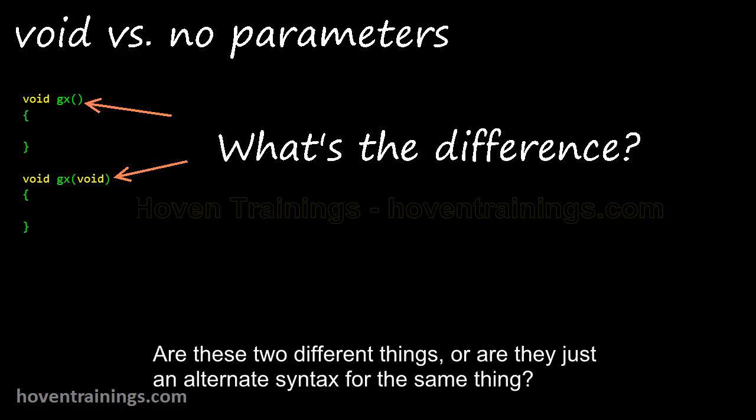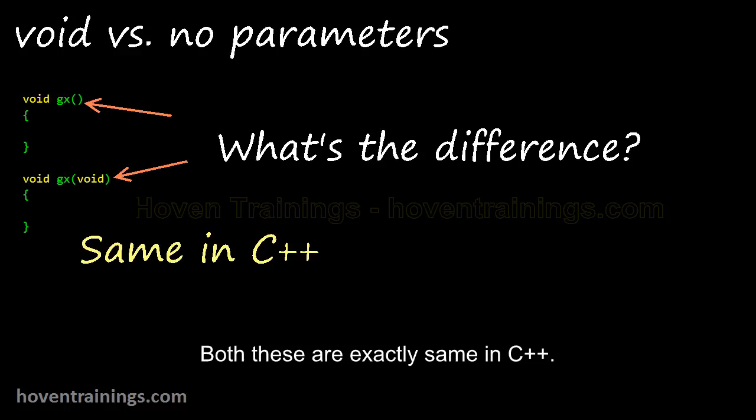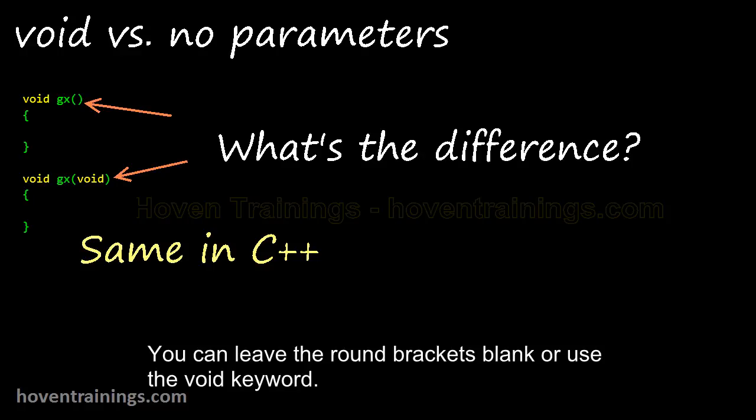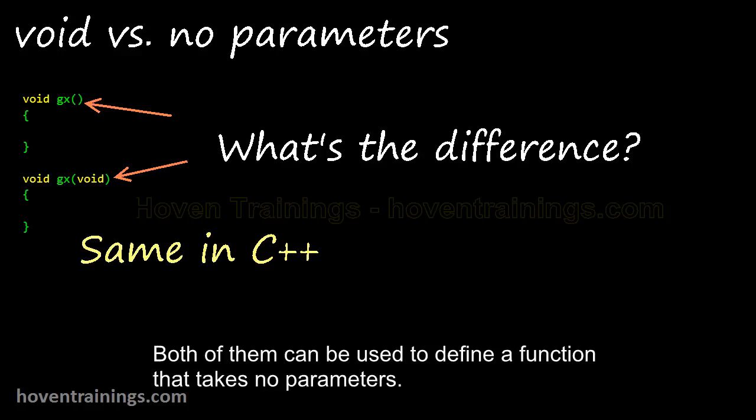Are these two different things, or are they just an alternate syntax for the same thing? Both these are exactly same in C++. You can leave the round brackets blank or use the void keyword. Meaning is exactly the same in both cases. Both of them can be used to define a function that takes no parameters.